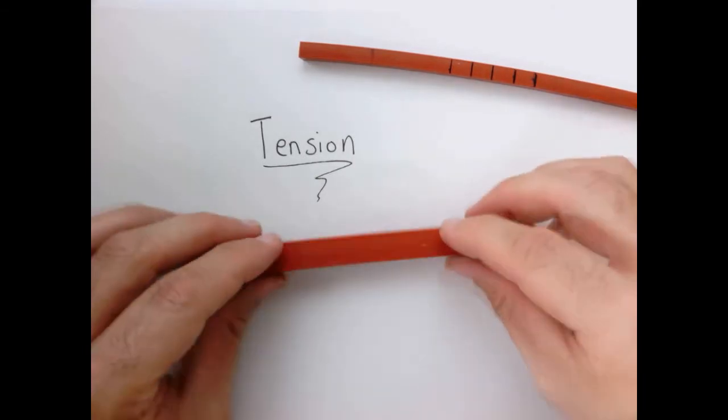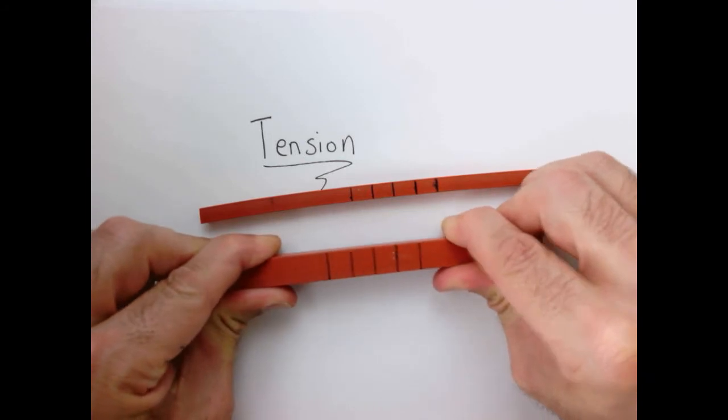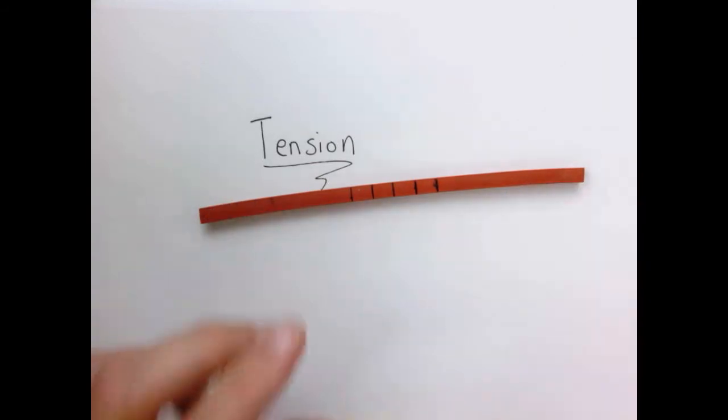So here I have the same material but it's quite a bit thicker, and if I pull on that it's a little harder to see but the object still deforms, but it takes a much greater force to get the same deformation.